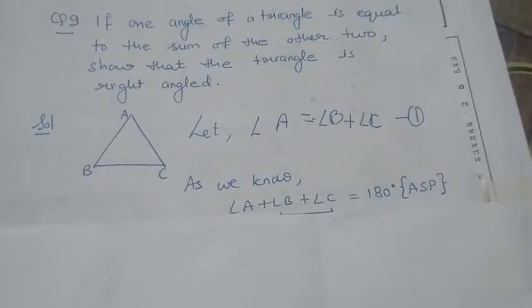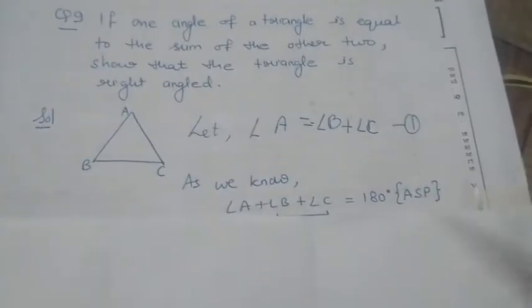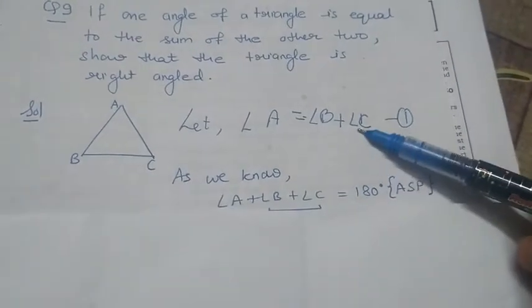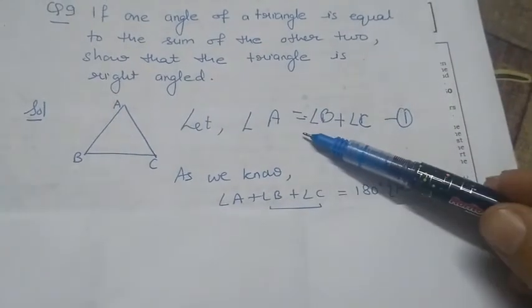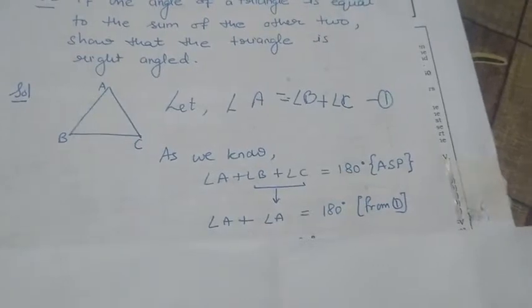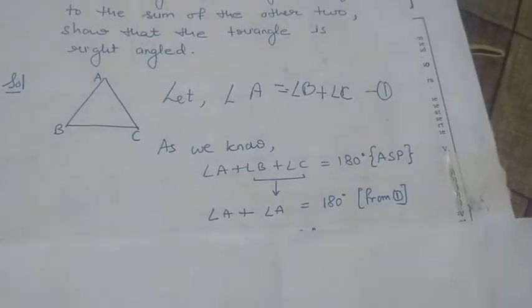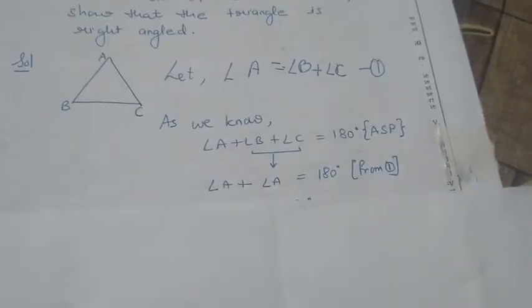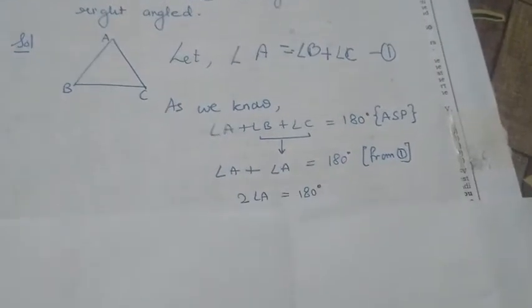Where it is given angle B plus C equals angle A. So it will look like this: angle A plus angle A equals 180 degrees.